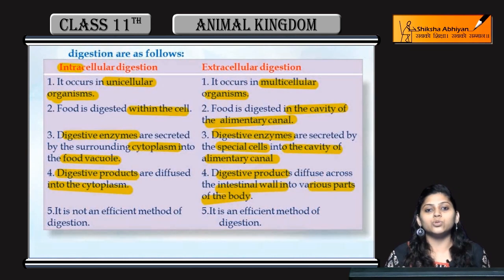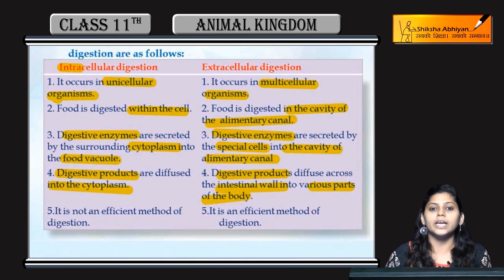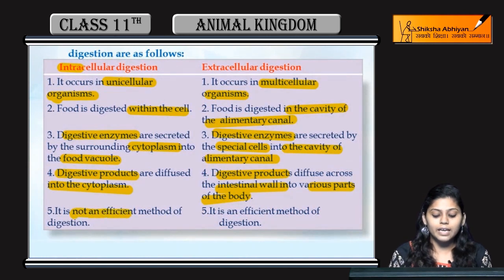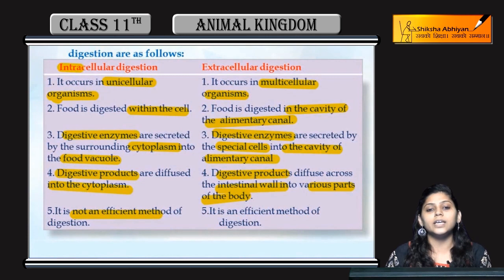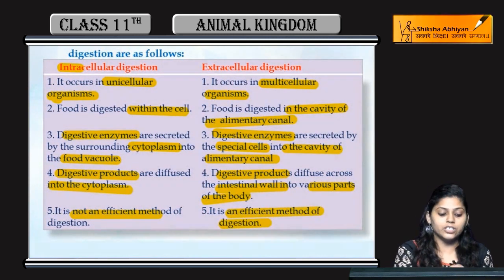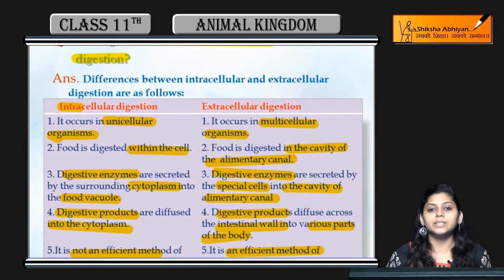Consider an analogy: if one person is assigned all tasks — going to school, earning money, and doing household work — their efficiency decreases. Similarly, in intracellular digestion, one cell has to do all the work, so it is not an efficient method. In extracellular digestion, work is divided among different cells, so they can function efficiently. Therefore, extracellular digestion is the more efficient method of digestion.